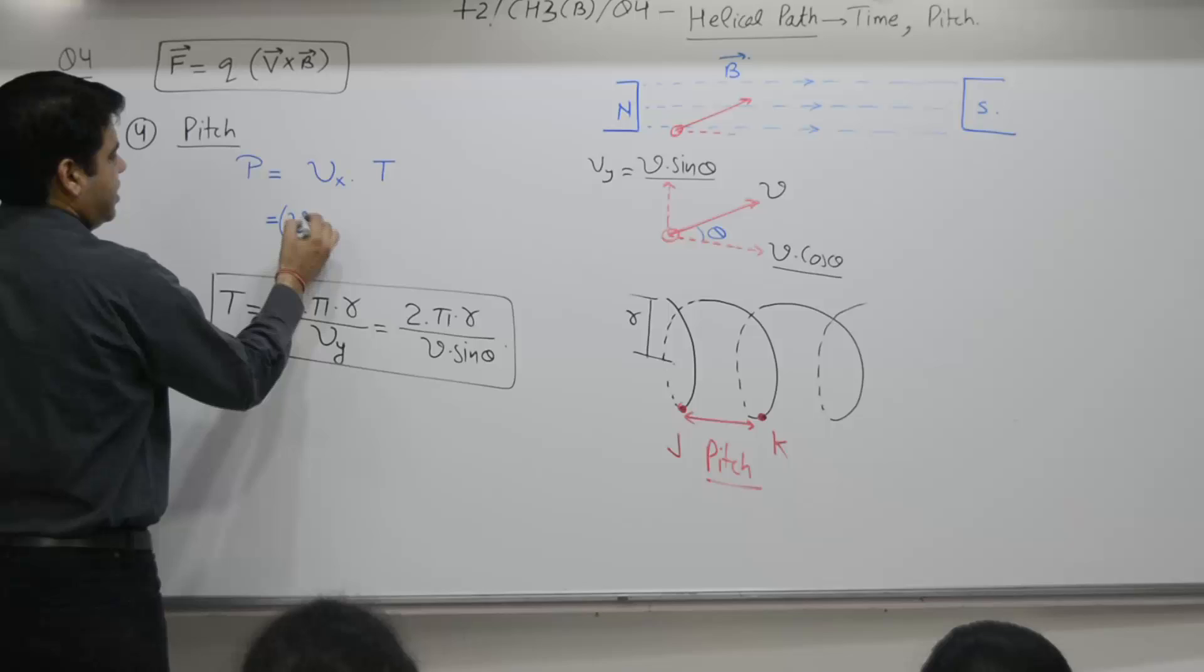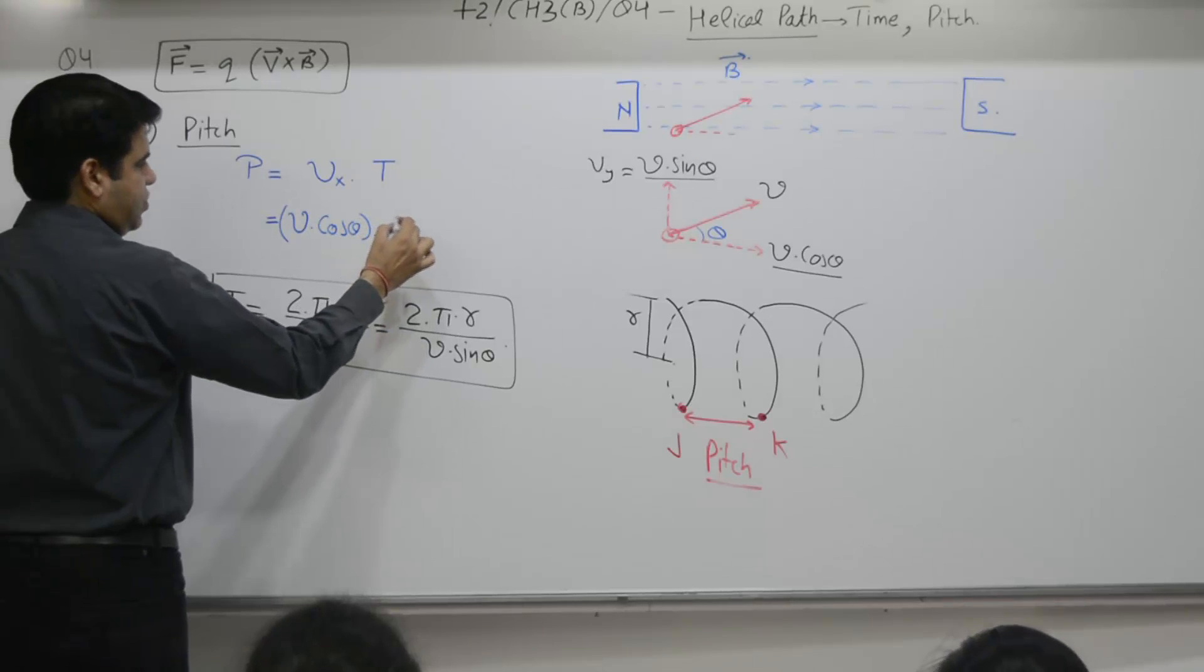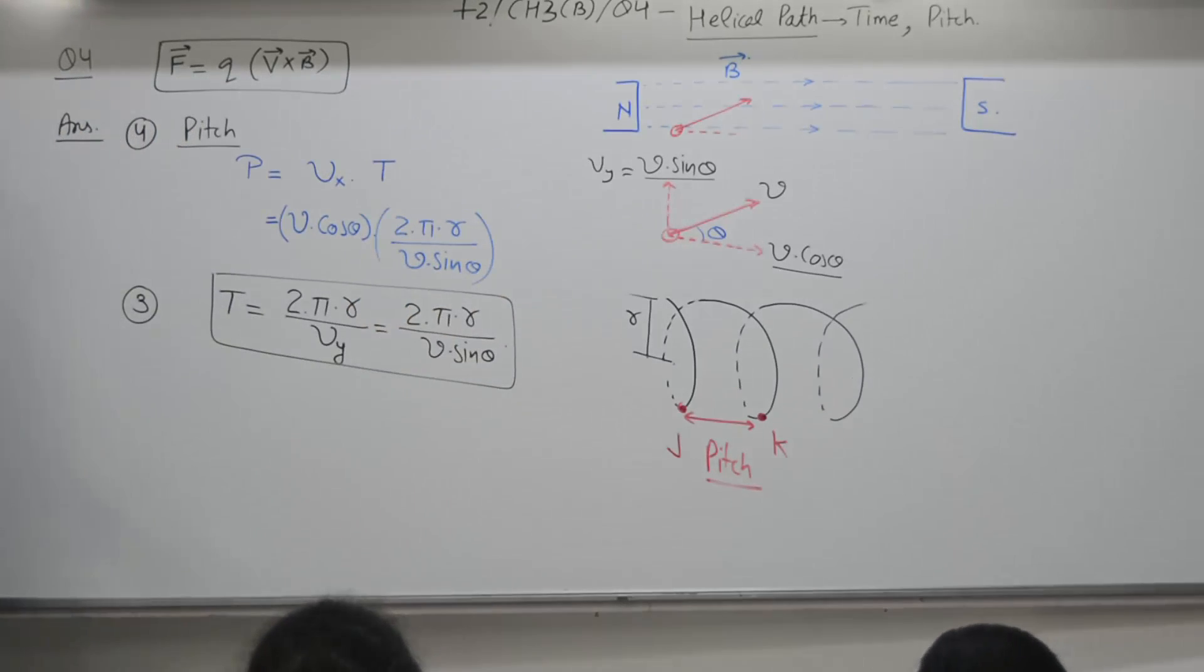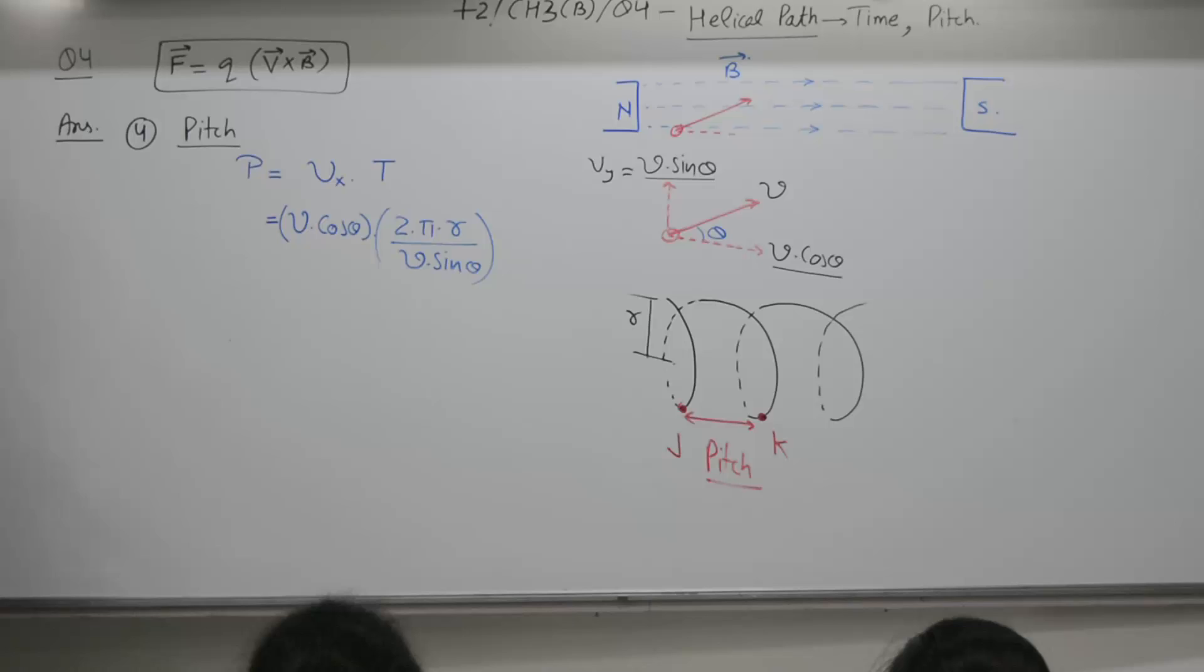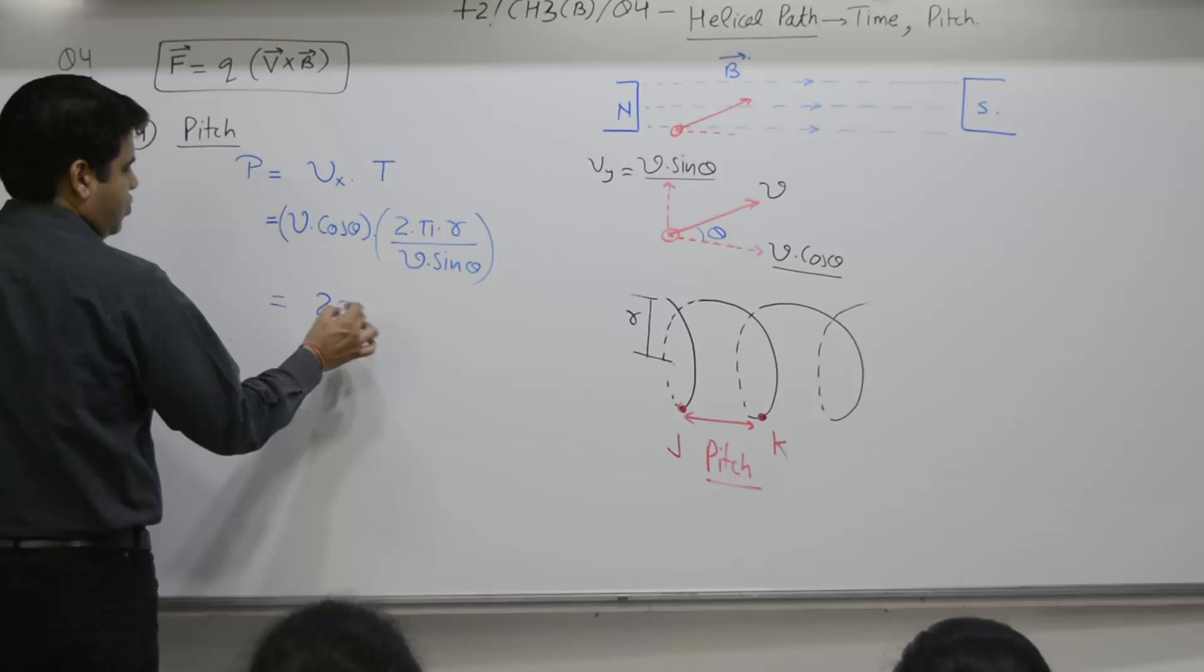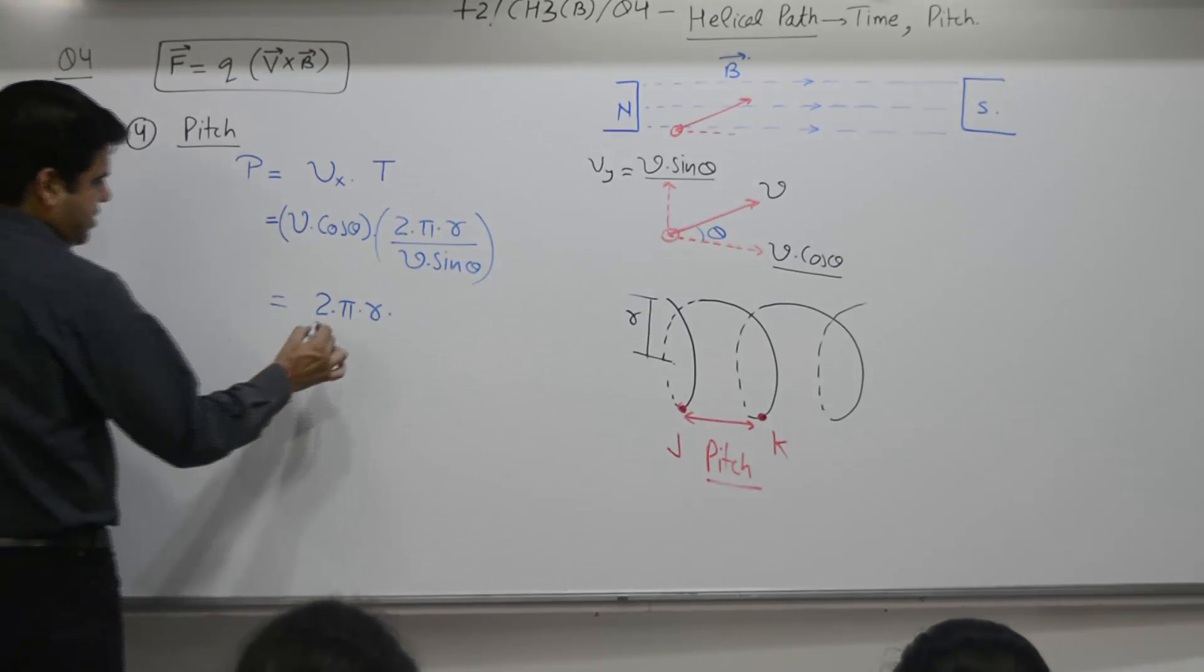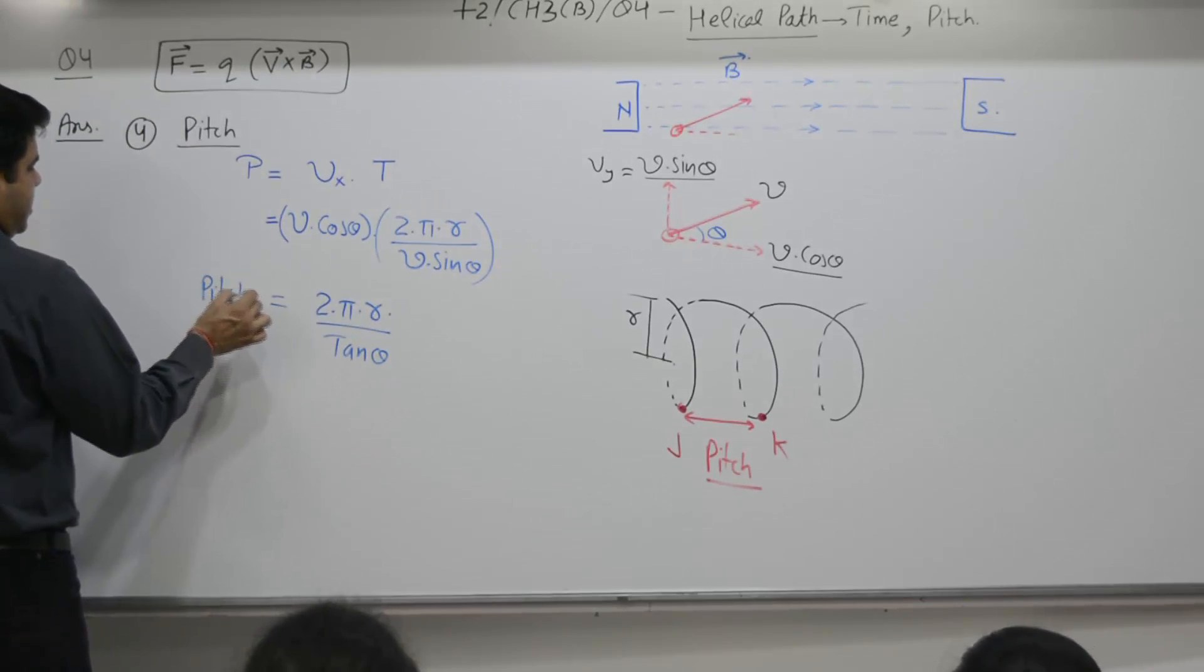V x is equal to what, V cos theta and time taken is the same, 2 pi r divided by V sin theta, same time. So, what you get is, V cancel, 2 pi r, divided by tangent theta, am I right? So, pitch is equal to, now you can refer to the notes.